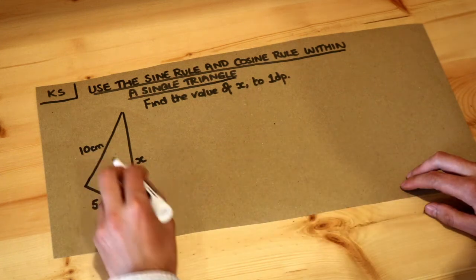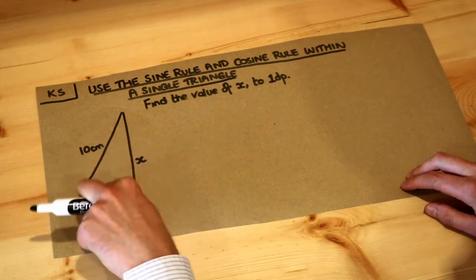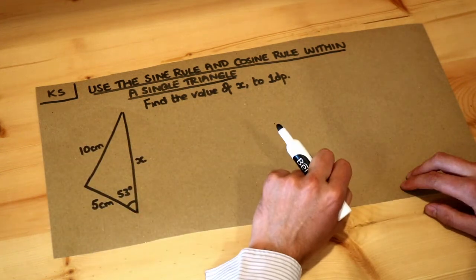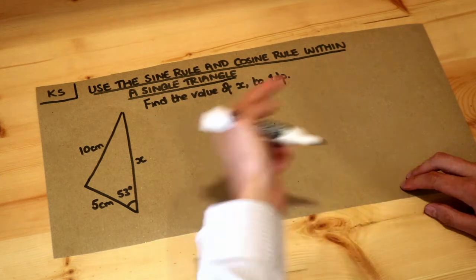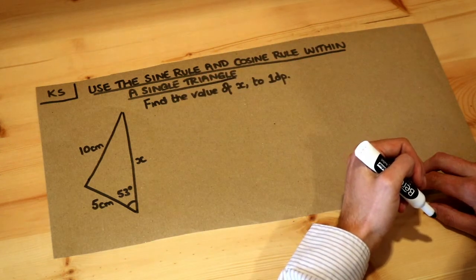We've got a triangle here and we want to find the length x. We've got all three sides involved and an angle involved. Previously I said if you have three sides and an angle involved, then we can probably use the cosine rule.